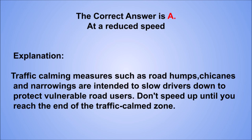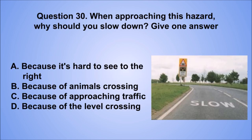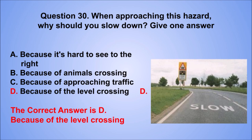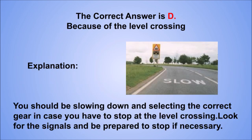Question 30. When approaching this hazard, why should you slow down? Give one answer. A. Because it's hard to see to the right. B. Because of animals crossing. C. Because of approaching traffic. D. Because of the level crossing. The correct answer is D, because of the level crossing. You should be slowing down and selecting the correct gear in case you have to stop at the level crossing. Look for the signals and be prepared to stop if necessary.